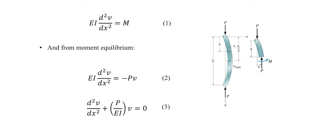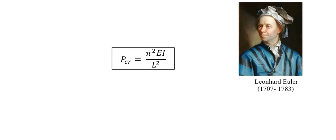The solution to this second order linear differential equation will give us the critical load. This equation was originally solved by Swiss mathematician Leonhard Euler in 1757. Therefore, the critical load is sometimes referred to as the Euler load, and the buckling equation is called the Euler equation: PCR equals pi squared times EI over L squared.